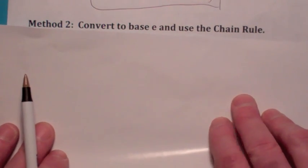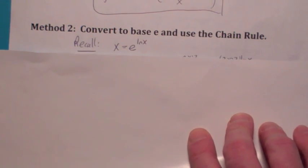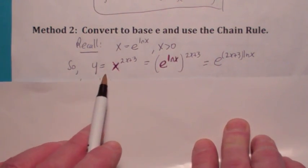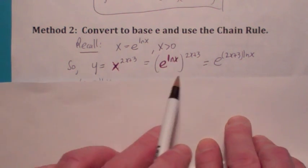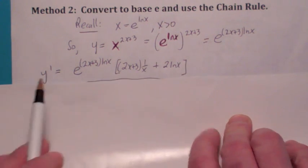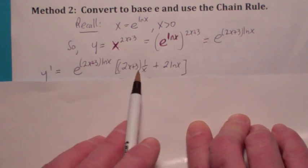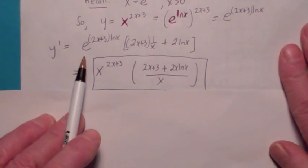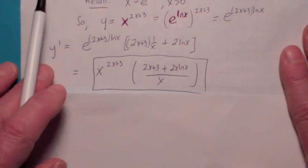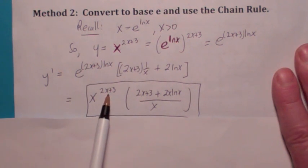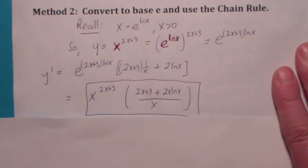Another way to do it is to convert this function to base e. Recall, as long as x is greater than 0, x equals e to the ln of x. So if you go back to the original function and replace x with e to the natural log of x and multiply the exponent, you've converted it to base e, and we do have a formula for differentiating that. The derivative of e to a power is e to the power times the derivative of what's inside. You use the product rule here like before. Then in the last step, you rewrite: e to the 2x plus 3 times ln of x is x to the 2x plus 3. You replace that expression and get the common denominator, ending up with the same answer as before.